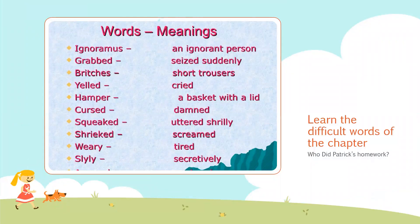Now look at the difficult words of the chapter 'Who Did Patrick's Homework?' The word meanings here are: 'ignoramus' means an ignorant person or a person who has lack of knowledge; 'grab' means seized suddenly or caught; 'britches' are short trousers; 'yelled' means cried very loudly; 'hamper' is a basket with a lid; 'cursed' means damned; 'squicked' means uttered shrilly; 'shrieked' means shrieked loudly at the top of the pitch; 'weary' is tired or exhausted; 'slyly' is secretive.